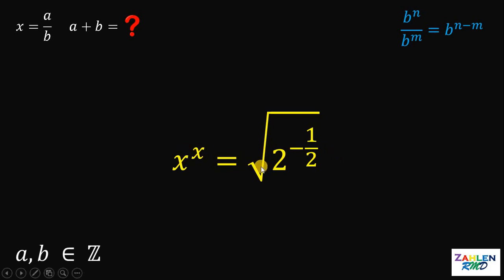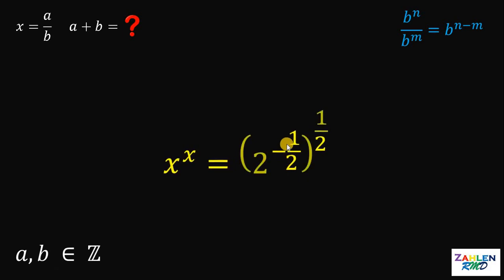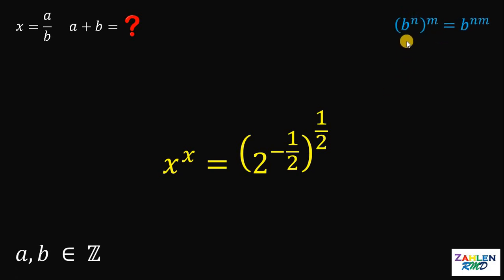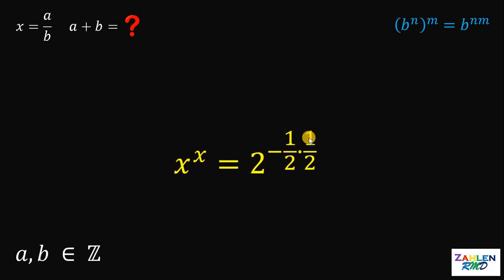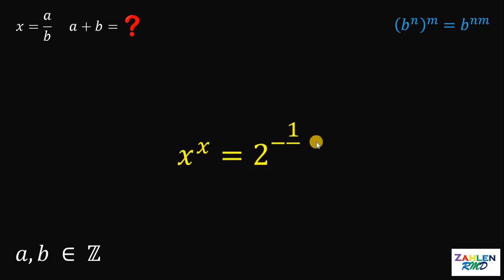Take note that square root of 2 raised to negative 1 half is the same thing as 2 raised to 1 half, raised to 1 half. Recall that if we have b raised to n raised to the power of m, it is equivalent to b raised to n times m — the product of n and m. Therefore, the right-hand side can be written as 2 raised to negative 1 half times 1 half, and negative 1 half times 1 half is just negative 1 fourth.